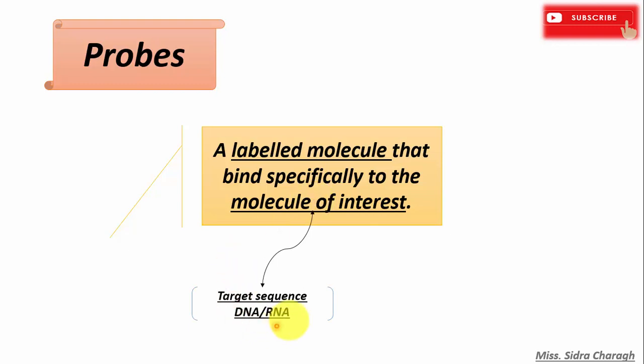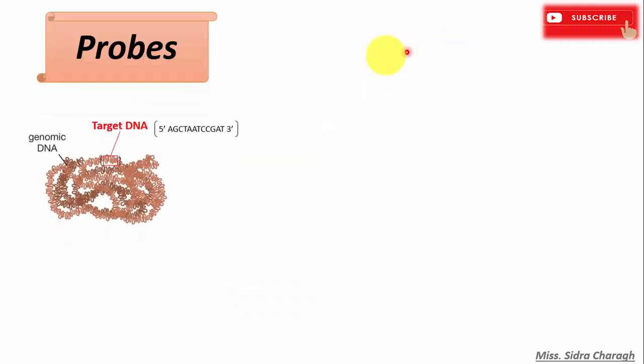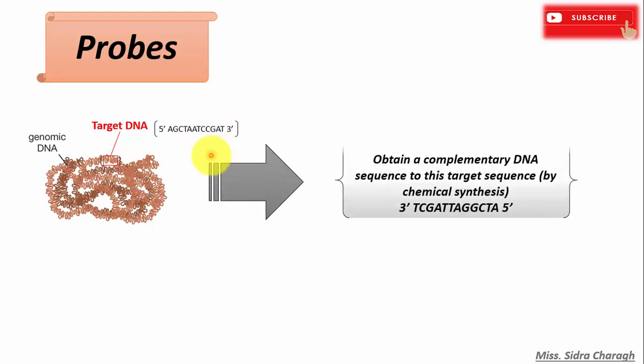So here the molecule of interest is the target DNA or RNA sequences, and the labeled molecule helps in the detection process. Suppose we want to detect this DNA sequence, so we will obtain a complementary DNA sequence. So here we obtain a complementary target sequence by chemical synthesis and we will label this complementary DNA strand.